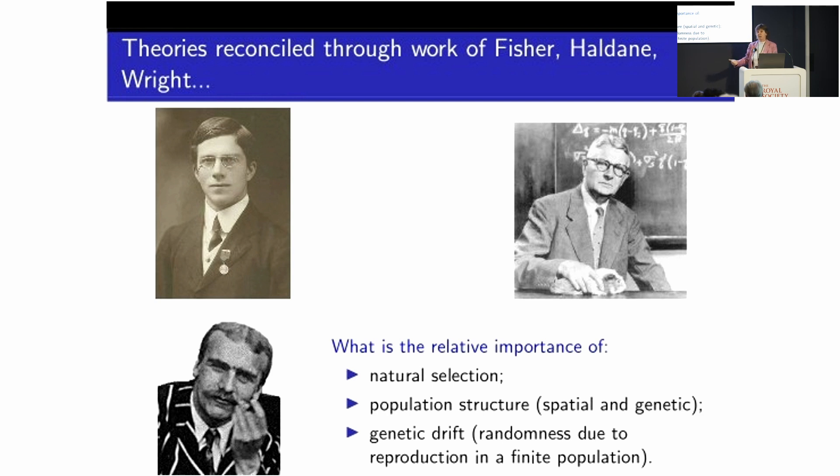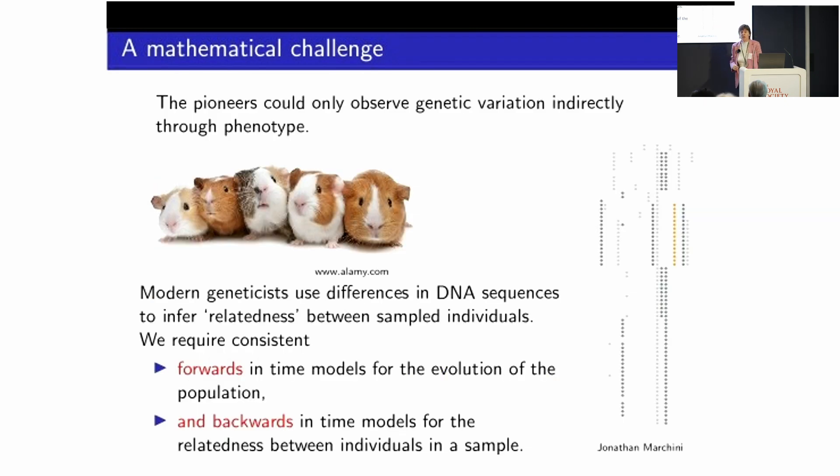For example, what's the importance of natural selection as opposed to the fact that we live on the surface of the earth with a spatial structure, or to genetic drift, which is really the love child of Sewell Wright here, which is the process, it's the name that we give to the process that's just randomness due to reproduction in a finite population. So we still don't really know the answer, but we think we can make some progress. And why do we suddenly think we can make progress when these extraordinarily smart people couldn't? Well, you'll see that Sewell Wright has a guinea pig in his hand. Now, that wasn't for wiping the board. It's actually because he bred guinea pigs. But he could only observe genetic variation indirectly through looking at phenotype.